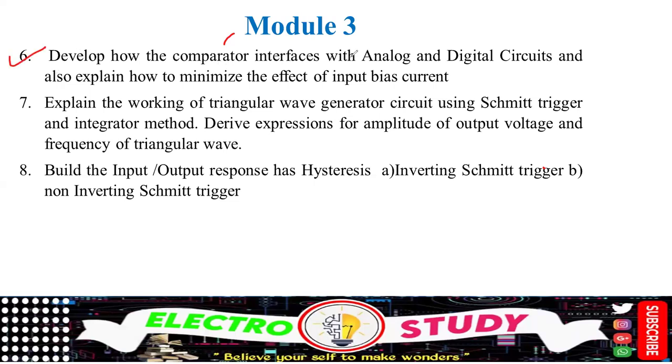Develop how the comparator interfaces with the analog and digital circuit and also explain the minimates the effect of input biasing current. That is a theory like analytical type question which has the weightage of eight marks. At least you can expect it. Explain the working of triangular wave generator circuit using smith trigger. Very, very important and integrator method. Derive the expression for amplitude output to voltage and the frequency of triangular wave. Build the input output response of a hysteresis inverting smith trigger and a non-inverting smith trigger. Most of the questions are theoretical type. You can expect more derivations, especially DAC. We have already shown in the first slide about digital to analog converter and that derivation is very important. And apart from that 6, 7, 8, these kind of questions also you can expect in the examination.